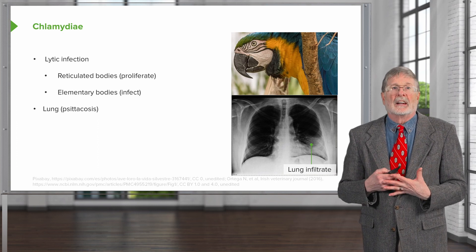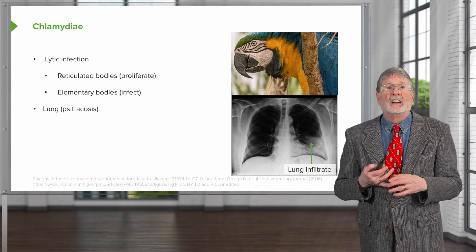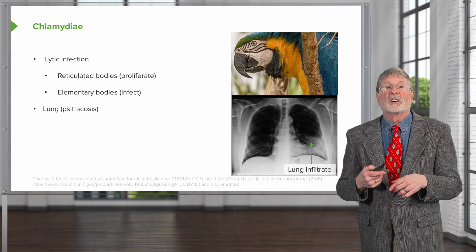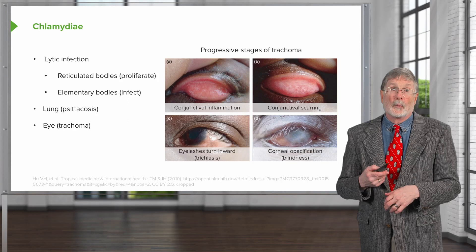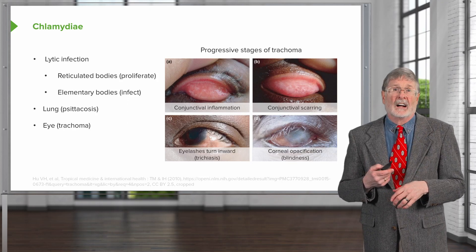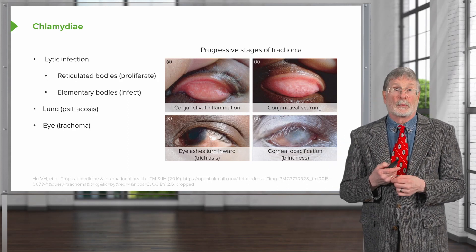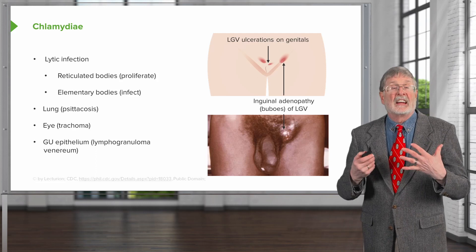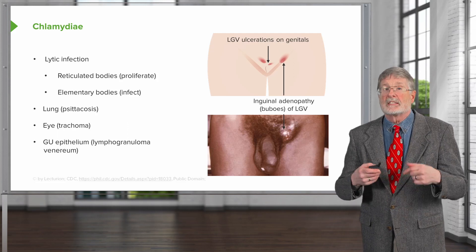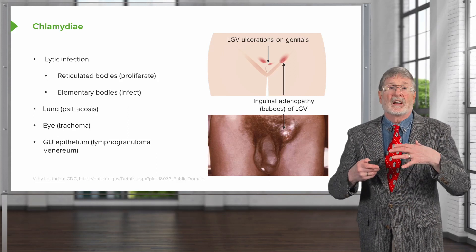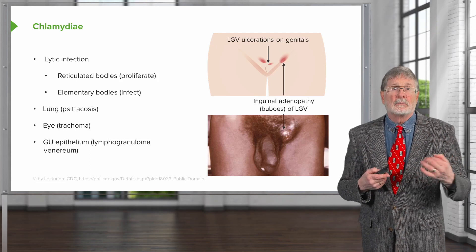Diseases that occur because of chlamydia: Psittacosis, which is transmitted by birds — that's why the parrot is there — is a very common form of lung disease in endemic areas. Trachoma, caused by Chlamydia trachomatis, is an eye infection and is actually the most common cause of blindness in the developing world. And then there's a venereal form called lymphogranuloma venereum, which is transmitted venereally and causes abscess formation and lymphadenopathy in the pelvic region.